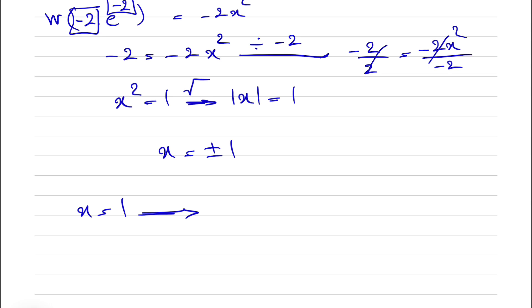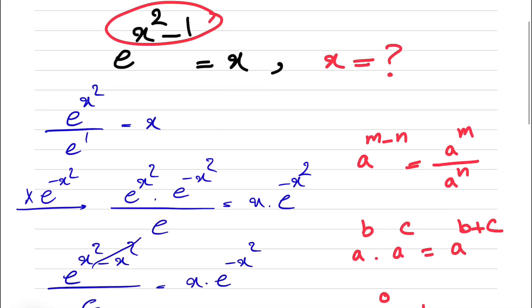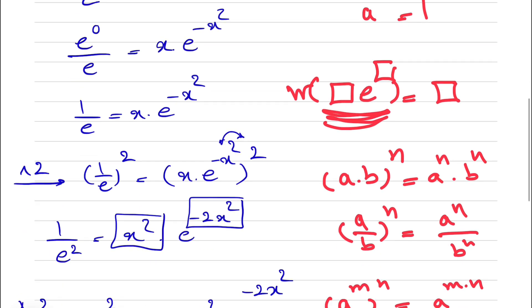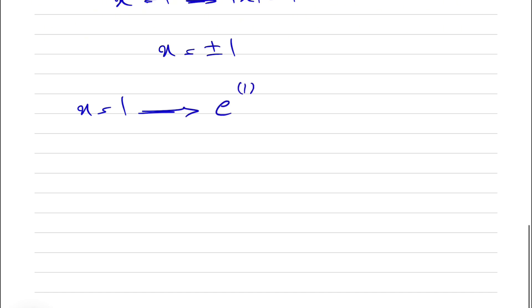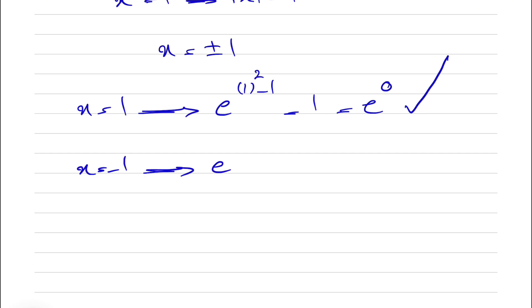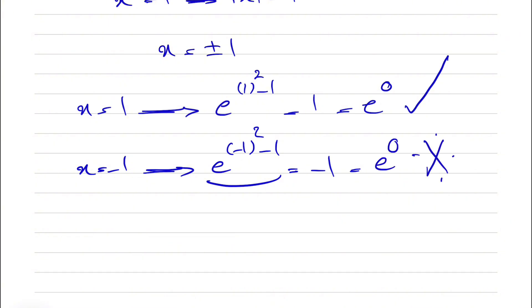If we put x equal to 1 in the equation, we have e to the power of x squared minus 1 is equal to 1. This will be equal to e to the power of 0, which is 1. So this one worked. Let's try x equal to minus 1: e to the power of minus 1 squared minus 1, and on the right side we have minus 1. This side would be e to the power of 0, which is 1, and that is not equal to minus 1. So the only answer is x is equal to 1.